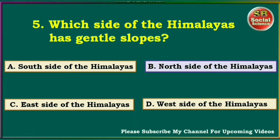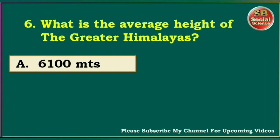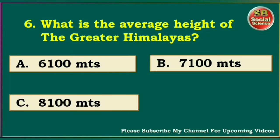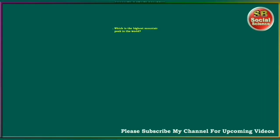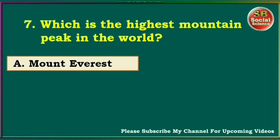What is the average height of the Greater Himalayas? 6100 meters, 7100 meters, 8100 meters, 5100 meters. The right answer is 6100 meters. Which is the highest mountain peak in the world? Mount Everest, Makalu, Mount Godwin-Austin, Kanchanjunga. The right answer is Mount Everest.